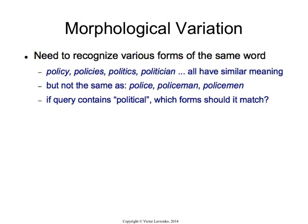What I want to talk about now is morphological variation. Most human languages are inflective in one way or another, so you have lots of variations of the same concept depending on the context in which the word occurs. You have plurals, you have various endings. For example, policy, policies, politics, politician — all of these words are referring to a similar concept, they're all roughly related to the same thing: politics.